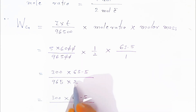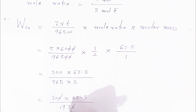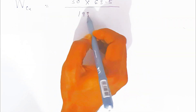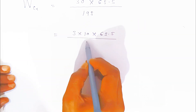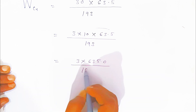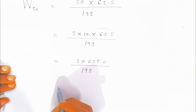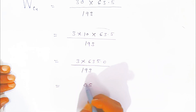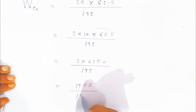Simplifying further: 300 × 63.5 gives 19050. Cancelling the trailing zero, we get 1905 upon 193. This can be written as 3 × 10 × 63.5 upon 193, or 3 × 635 upon 193, which equals 1905 upon 193. In the examination, to divide a four-digit number by a three-digit number you use the log table.